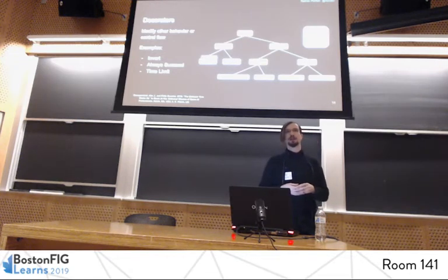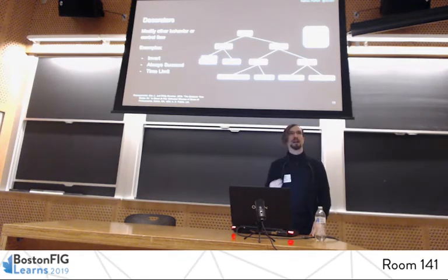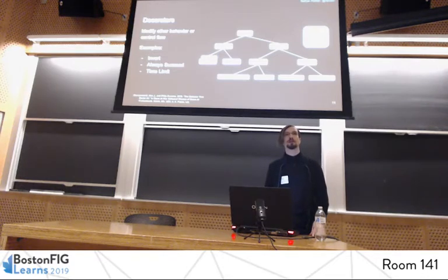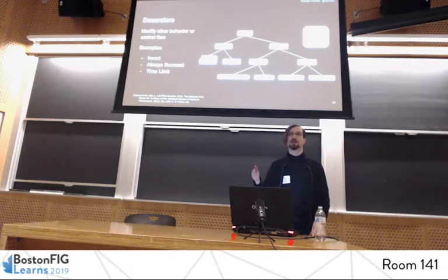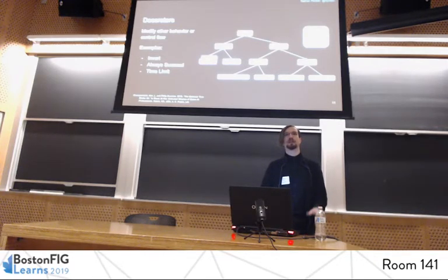Decorators exist in some behavior tree systems but not others. They have a single child and they modify the behavior of that child. This can be really useful for things like inverting the result of a child — so instead of having to write both a 'have I seen the enemy' condition and a 'have I not seen the enemy' condition, you can write one condition and then invert it for the other case. Decorators can modify things below them in the tree.